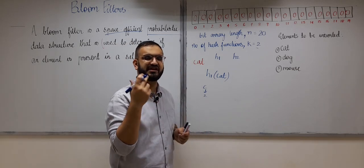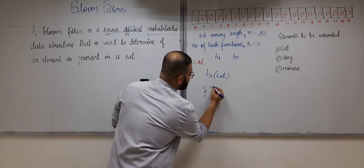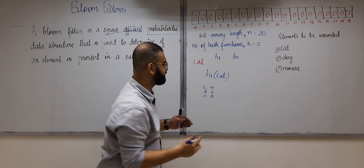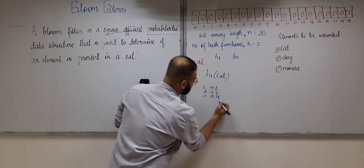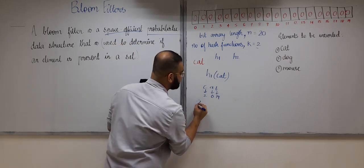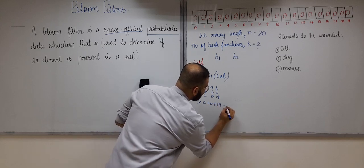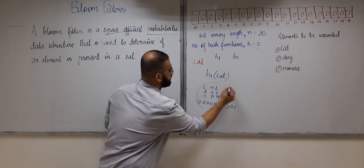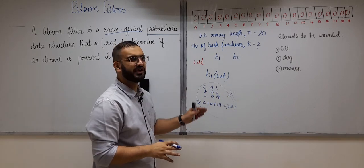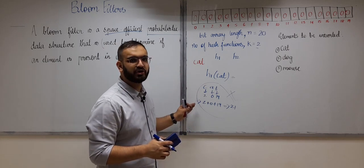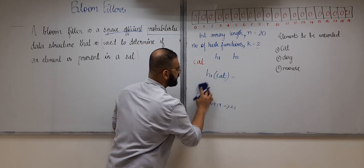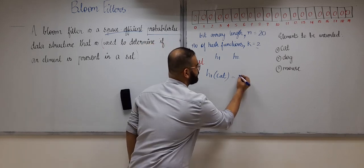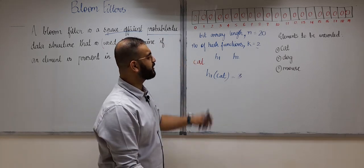For example, h1(cat) might be calculated by treating c=2, a=0, t=19 (where a=0 through z=25) and computing 2+0+19=21. But our focus is not on how the hash function is internally calculated. Our focus is the final hash value — we don't need to worry about the internal computation.